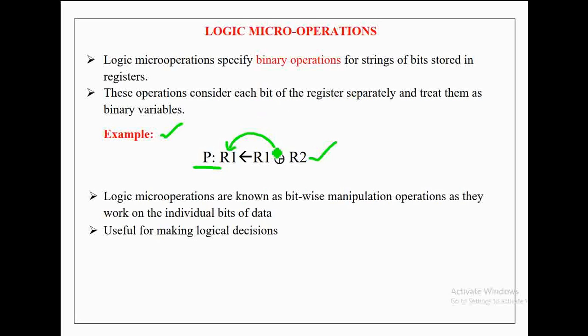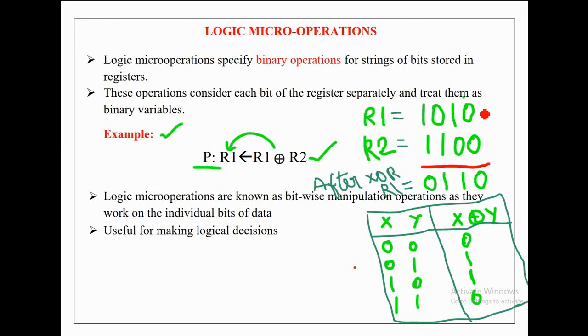Here the output of the XOR operation is produced by performing bit by bit XOR operation on each pair of bits in R1 and R2. If the content of R1 is equal to 1010 and R2 is equal to 1100 then the content of R1 after the XOR operation will be 0110.